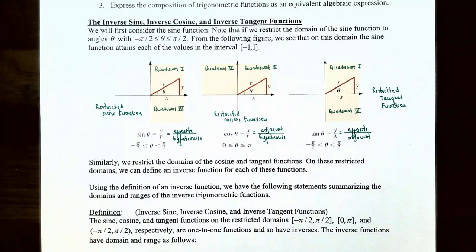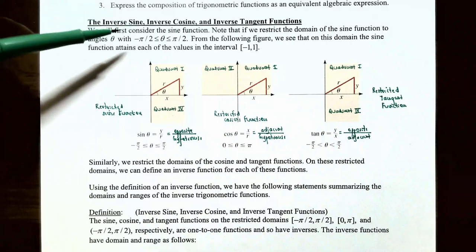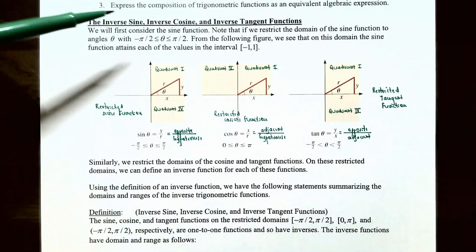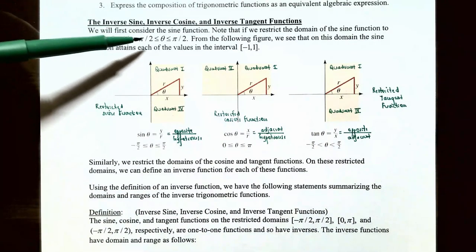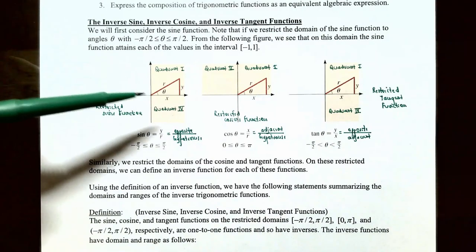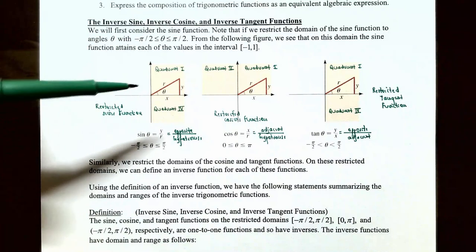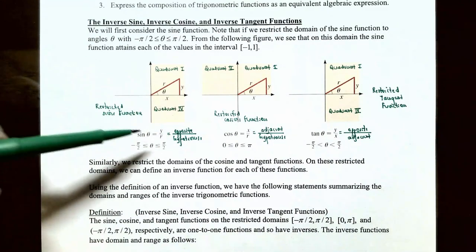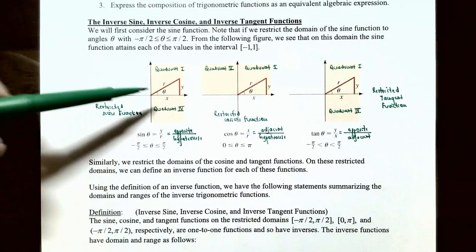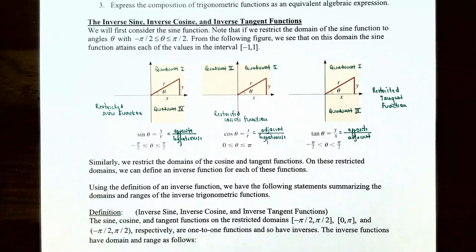First consider the sine function. If we restrict the domain of the sine function to angles theta between negative pi over 2 and pi over 2 including the endpoints, the function attains each value in the interval from y = -1 to y = 1. The values of theta for the sine function's restricted domain are between negative pi over 2 and pi over 2, placing the triangle in either quadrant 1 or 4. The sine function of theta is opposite divided by hypotenuse, which is y divided by r.